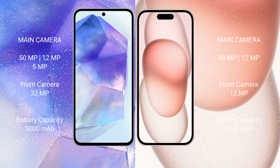Samsung Galaxy A55 features a rear triple camera setup of 50MP, 12MP, and 5MP, with a 32MP front camera. iPhone 15 features a rear dual camera setup of 48MP and 12MP, with a 12MP front camera.